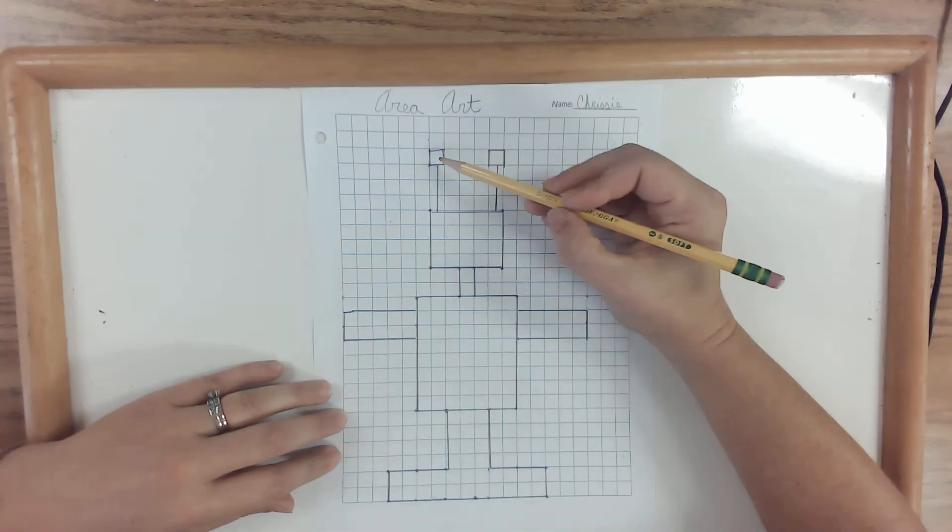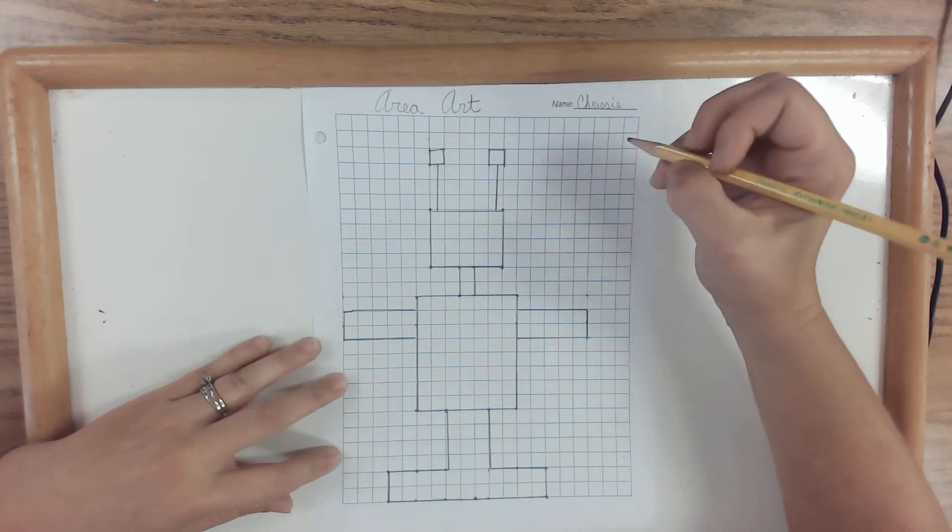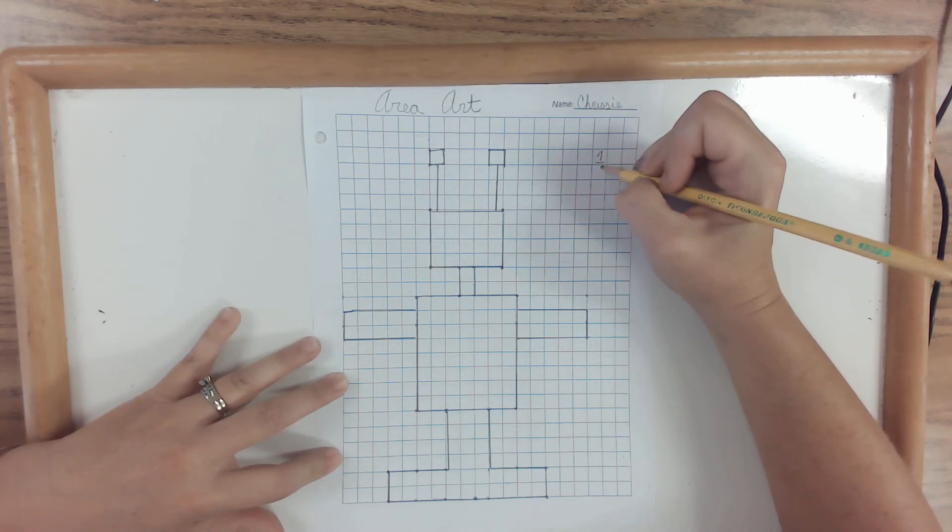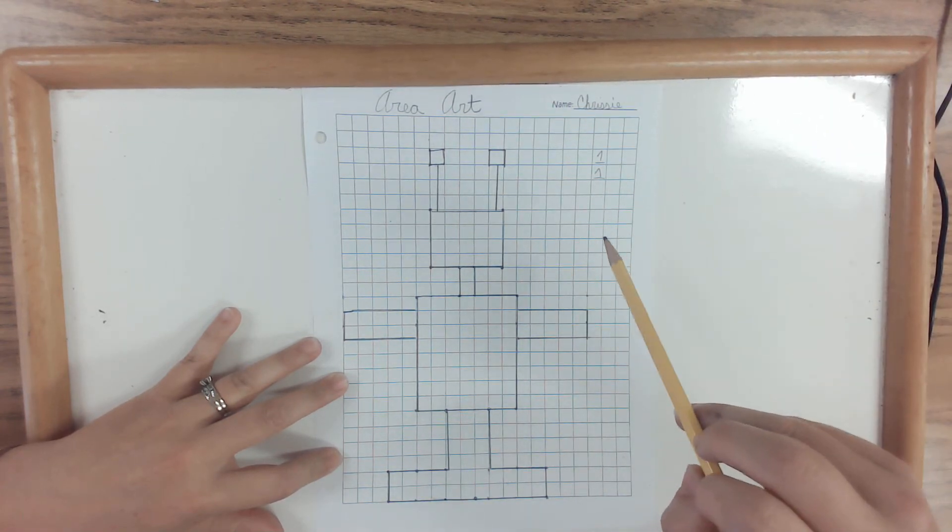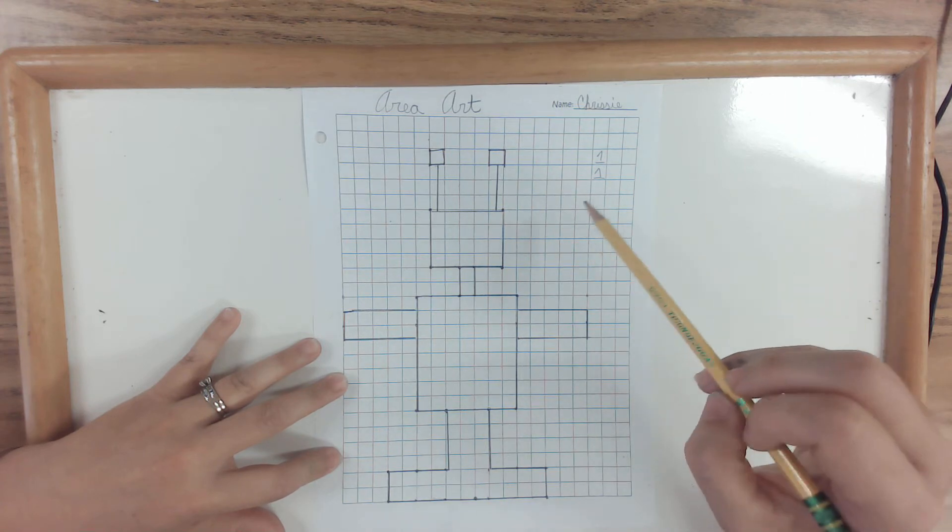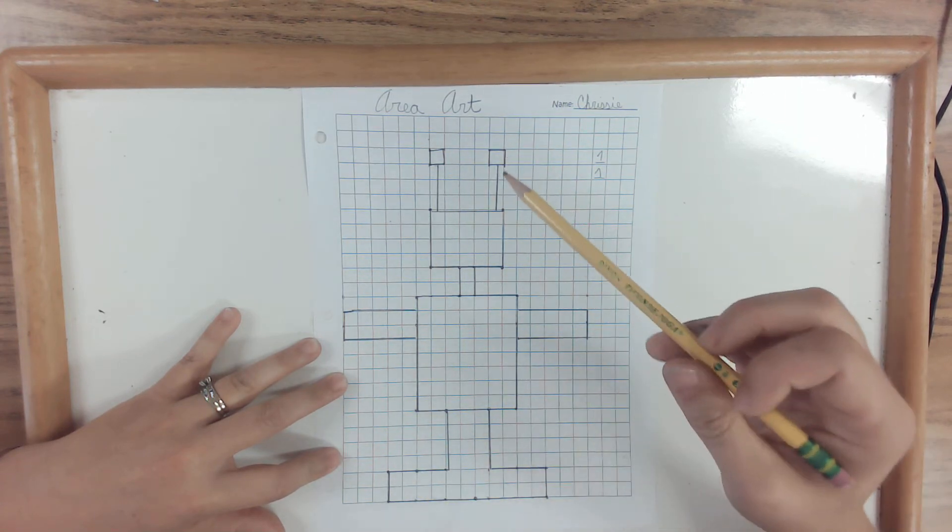And divide it up and do the area there. So these guys are pretty easy. They're just one square. So over here, I'm just going to put one and one. Now, you can also do the math work on the back of this sheet or on a separate sheet. Some people like to do it on the side all around them.